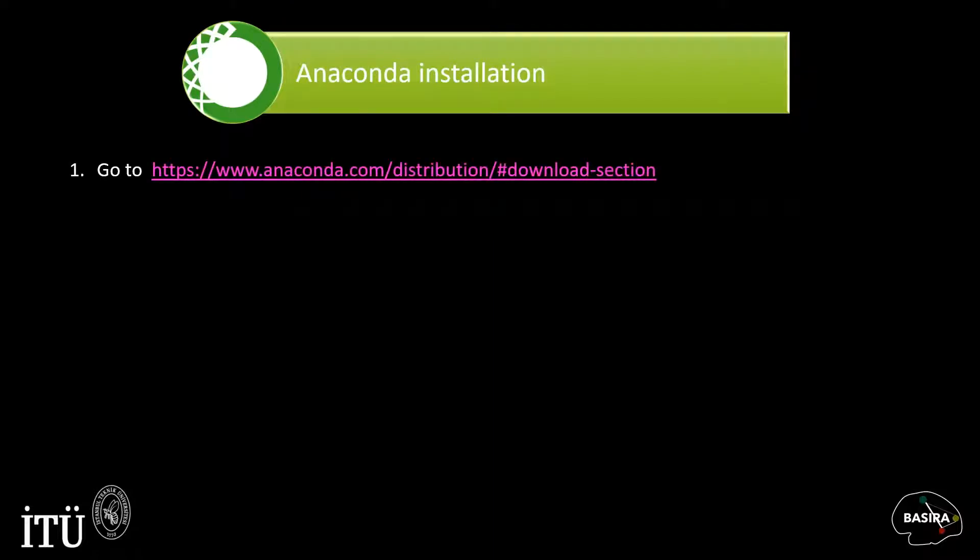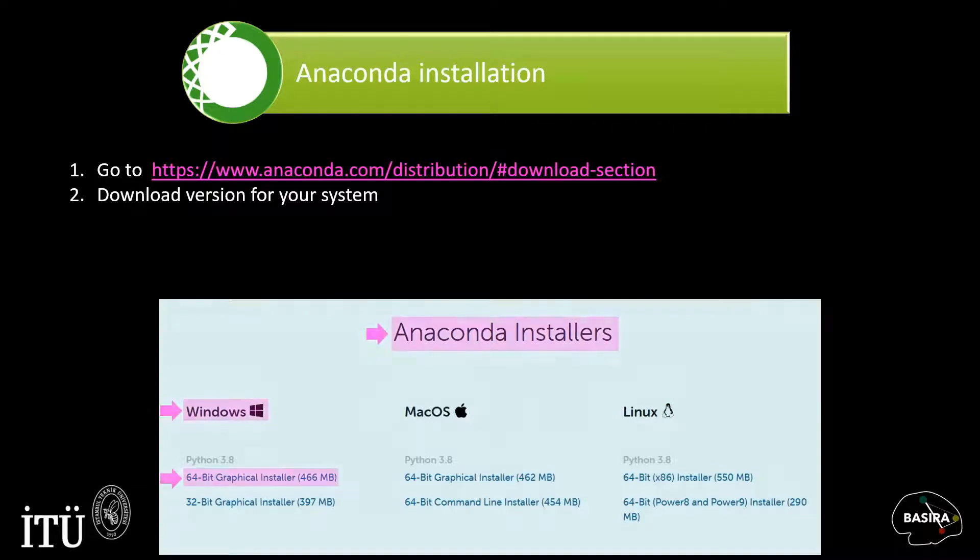In this step, you will download Anaconda from the following website. Download the latest Python 3 version for your system. For example, in my case, I have downloaded Python 3.8 version for 64-bit Windows. Graphical installer will walk you through the installation process.